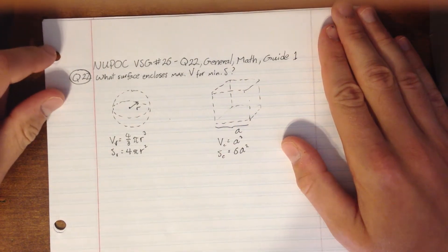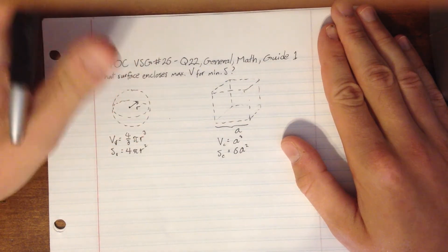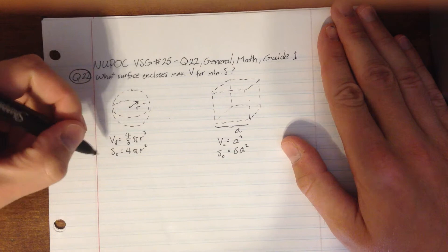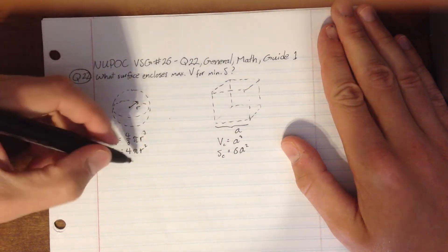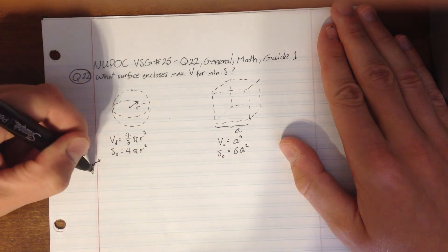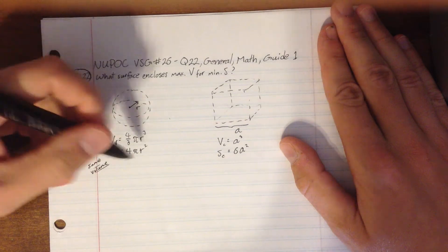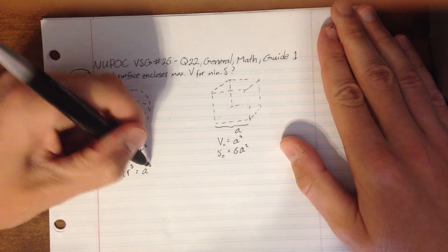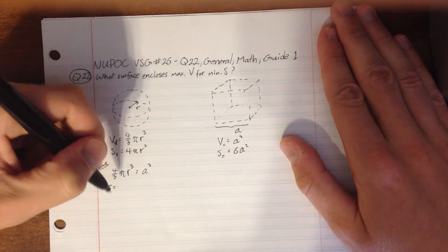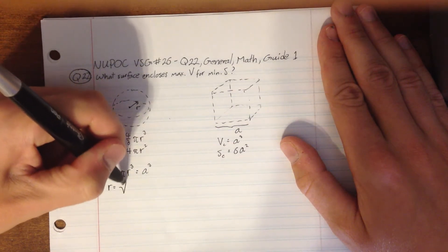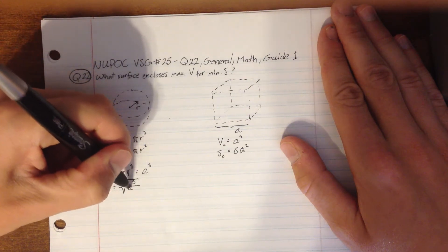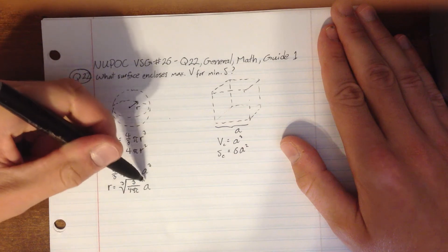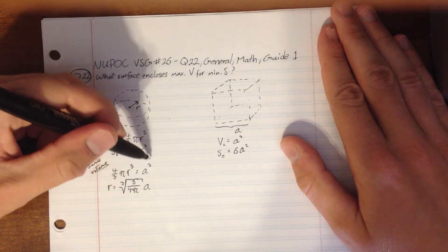Let's look at a sphere and a cube that both have the same volume and see which one has more or less surface area. We equate their volumes: Vs equals Vc, so 4/3 π r³ equals a³. Writing r in terms of a, we get r equals the cube root of (3 over 4π) times a.